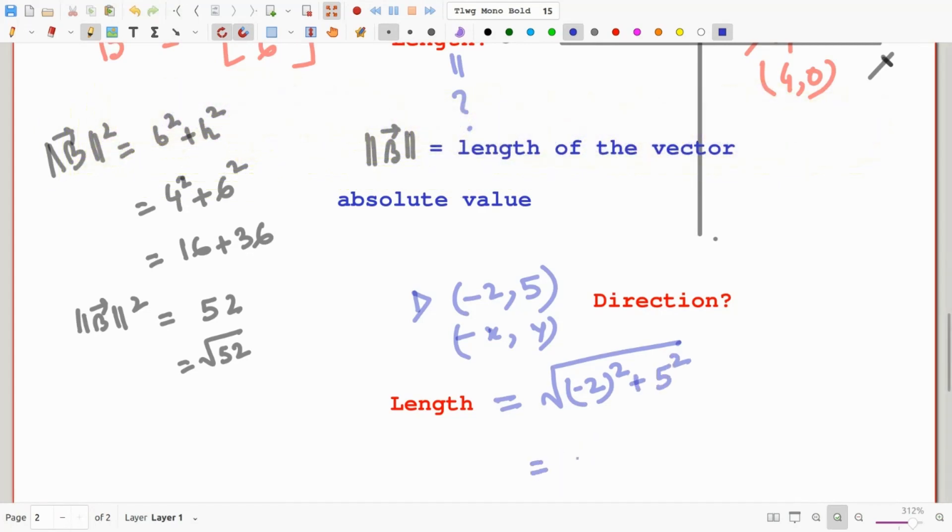Which simplifying, we obtain square root of 29.